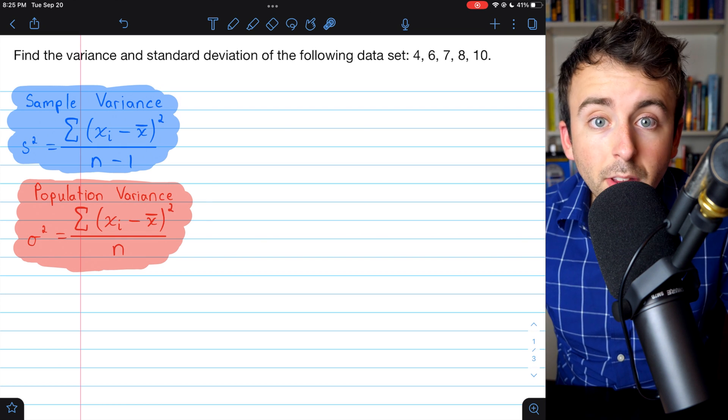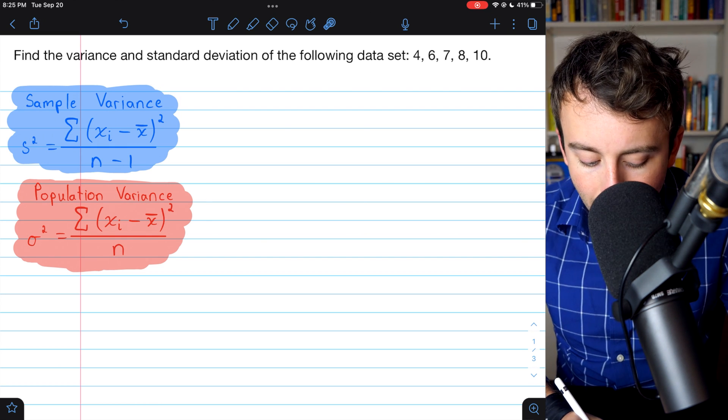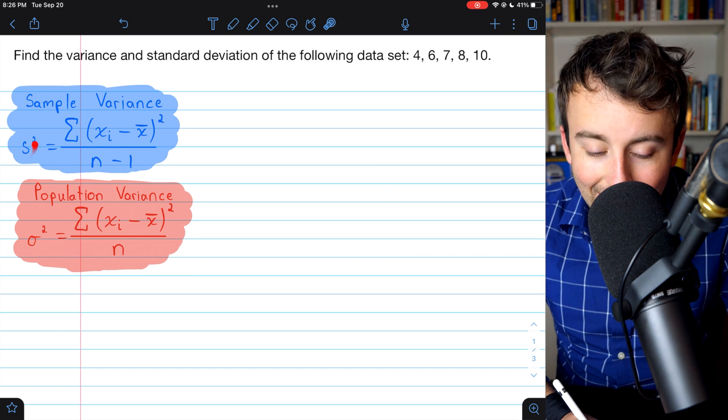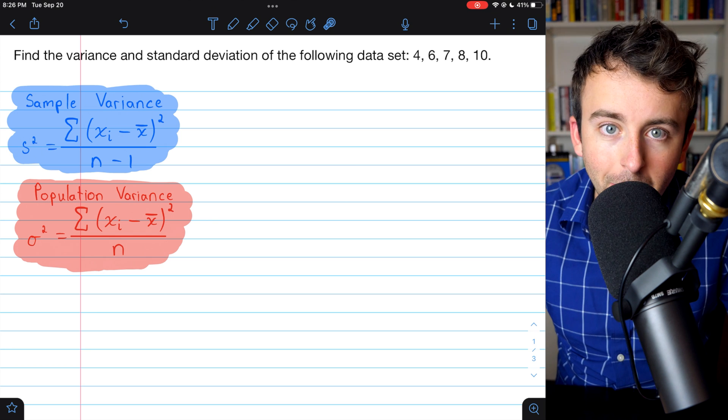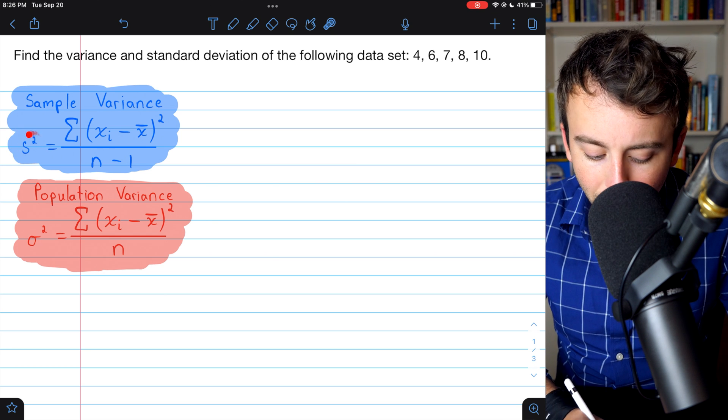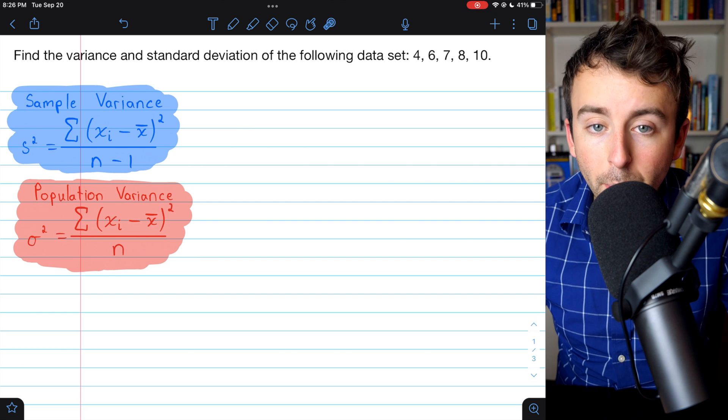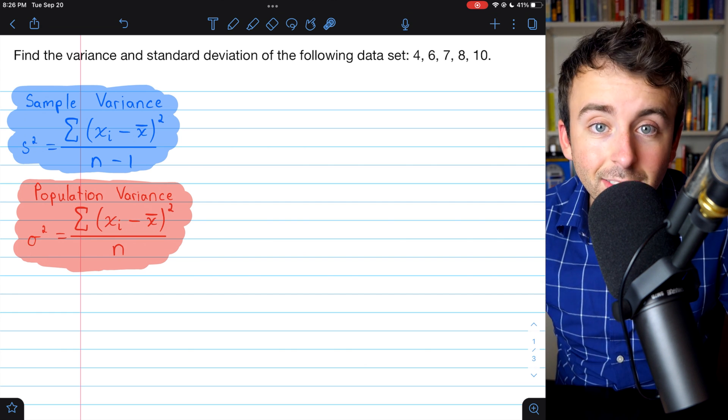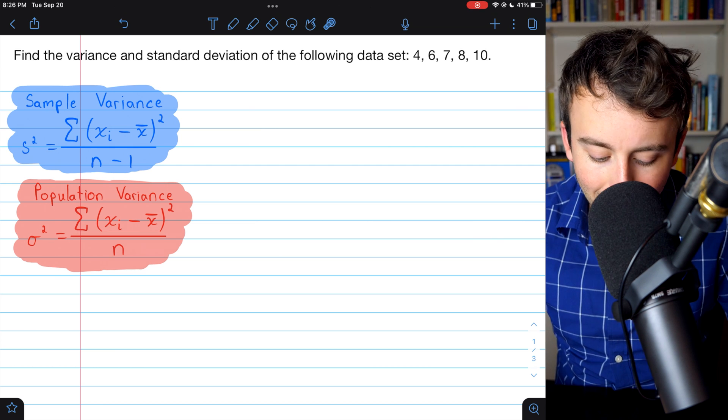Let's take a closer look at these formulas so that we can start to apply them. You'll notice that the sample variance has an s squared. That is the symbol for sample variance. So it's saying to calculate sample variance, this is what you got to do. Similarly, for population variance, this is sigma squared. That is the symbol for population variance.